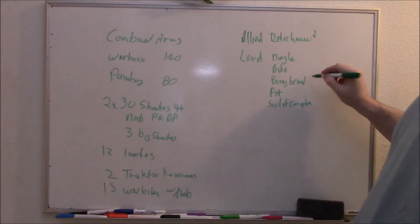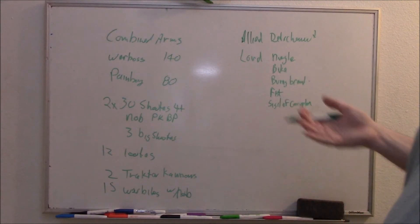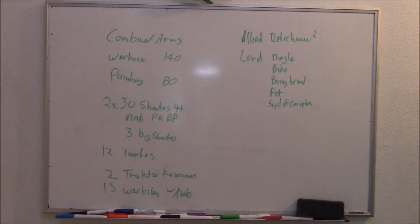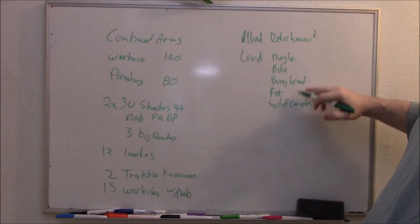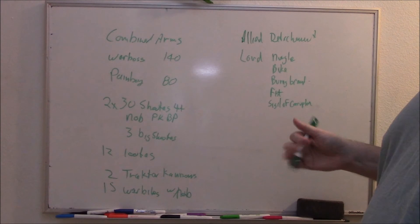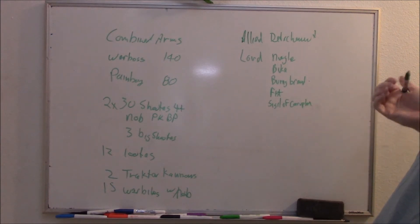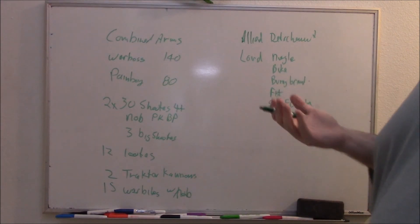Now the Burning Brand is optional. You can give them the Black Mace. The problem is that unlike with a monstrous creature, the Black Mace is only AP-4. You could actually take both the Fist and the Black Mace and then choose which one you want to use. That's definitely an option, but I love the Burning Brand with its Torrent AP-3 Flamer.